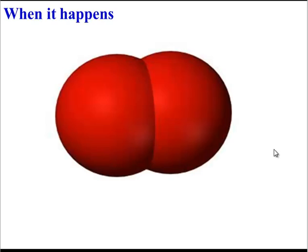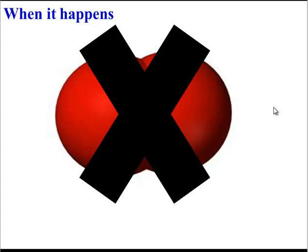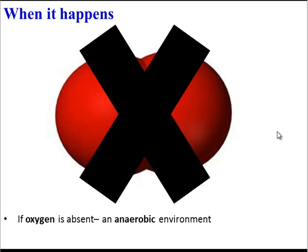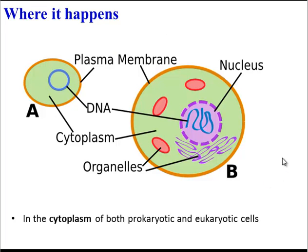Let's compare that to fermentation. When does fermentation happen? It usually happens when oxygen is not present — when the environment is anaerobic. Where does it happen? It happens in almost all types of cells, both prokaryotic cells like bacteria and eukaryotic cells such as our cells. It happens specifically in the cytoplasm, which makes sense because prokaryotic cells don't have fancy organelles, so it wouldn't make sense for fermentation to occur there.